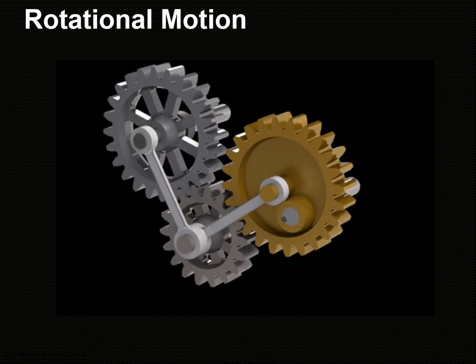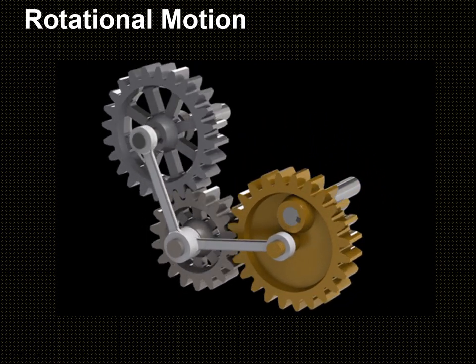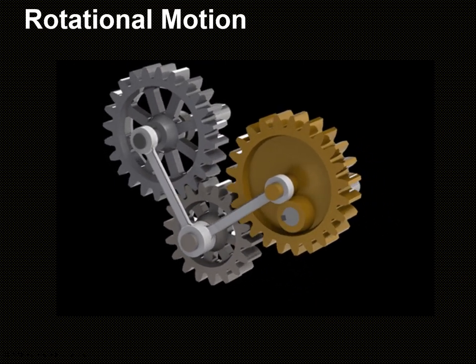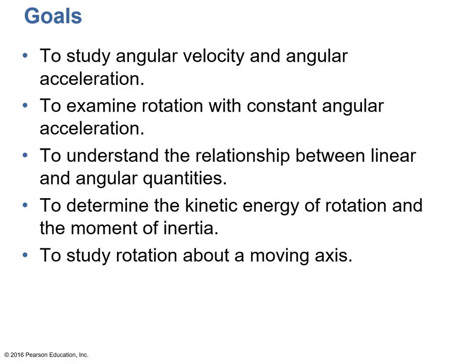Chapter 7: Rotational Motion. Goals for Chapter 7: to study angular velocity and angular acceleration, to examine rotation with constant angular acceleration, to understand the relationship between linear and angular quantities, to determine the kinetic energy of rotation and the moment of inertia, and to study rotation about a moving axis.